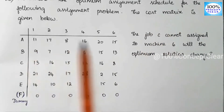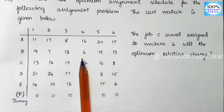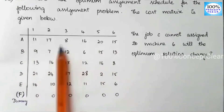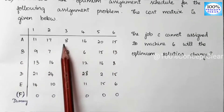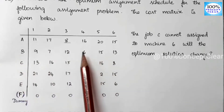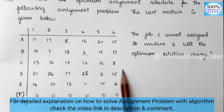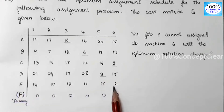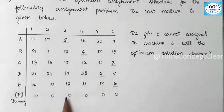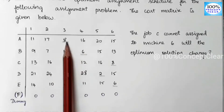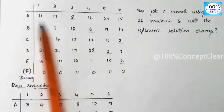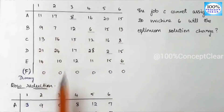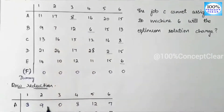Next, we check: this is a minimization type problem (cost matrix). For row reduction, we choose the least value row-wise. First row least value is 8, second row least value is 6, third row least value is 8, fourth row least value is 2, fifth row least value is 6, and sixth row least value is 0. So: 11 − 8 = 3, 17 − 8 = 9, 8 − 8 = 0.